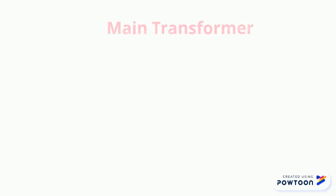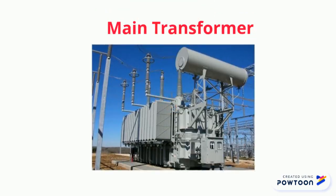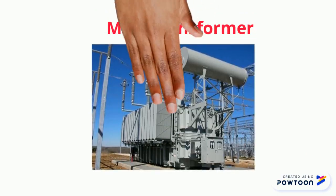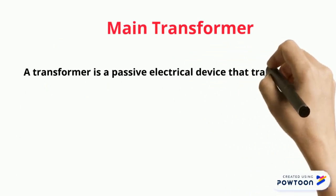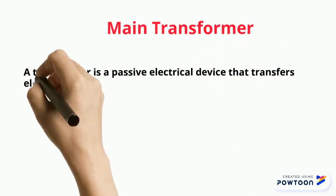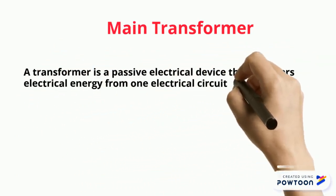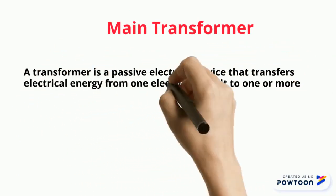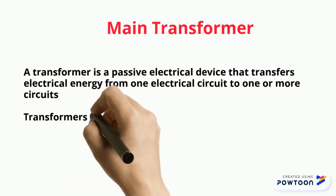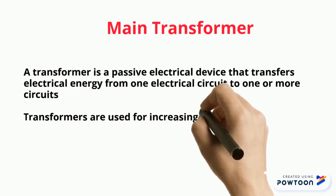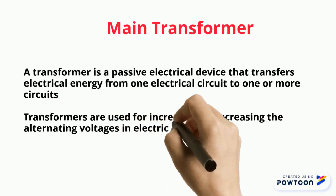Main Transformer. A transformer is a passive electrical device that transfers electrical energy from one electrical circuit to one or more circuits. Transformers are used for increasing or decreasing the alternating voltages in electric power applications.